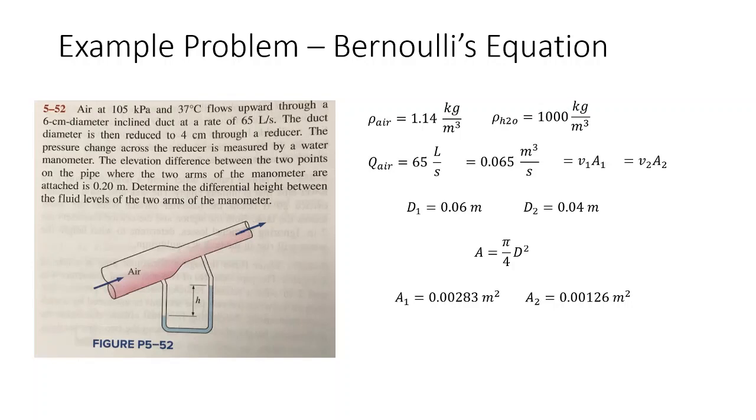We're going to divide our volumetric flow rate by our area to give us the velocities. We get a velocity through segment one of 22.968 meters per second and a velocity through segment two of 51.587 meters per second. By reducing our diameter we've increased the velocity quite a bit, which makes sense. That's what we would expect.